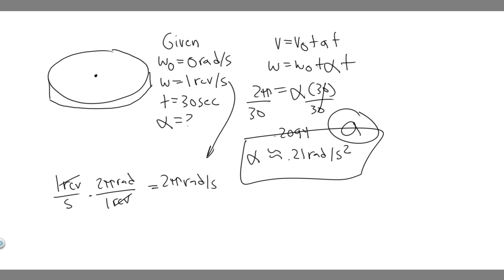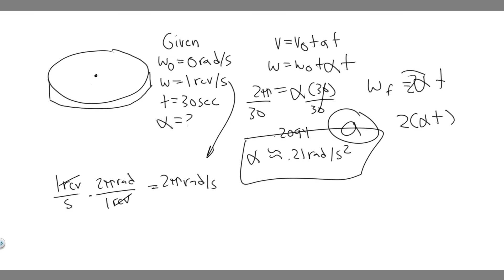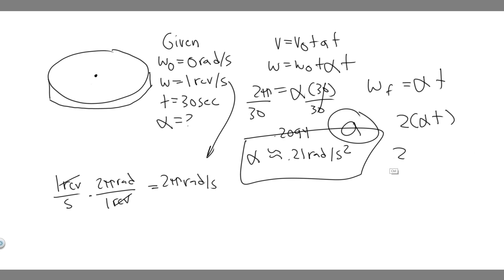For B, it's a thought experiment: with doubling the angular acceleration during the given period, would it double the final angular velocity? Since omega zero is zero, the equation simplifies to omega final equals alpha times T. If we double alpha, the right side becomes two times alpha times T, which equals two times omega final. So yes, doubling the angular acceleration does double the final angular velocity. Answer to A is 0.21 radians per second squared, and answer to B is yes.